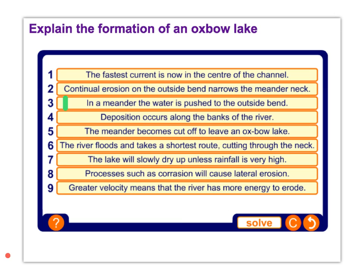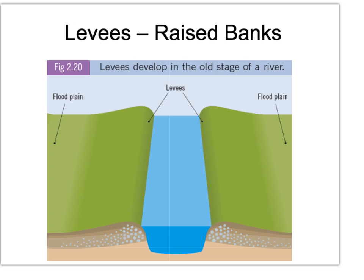The answers are: one, in a meander the water is pushed to the outside bend; two, greater velocity means the river has more energy to erode; three, processes such as corrosion cause lateral erosion; four, continual erosion of the outside bend narrows the meander's neck; five, the river floods and takes the shortest route, cutting through the neck; six, the fastest current is now in the centre of the channel; seven, deposition occurs along the banks; eight, the meander becomes cut off to leave an oxbow lake; nine, the lake will slowly dry up unless rainfall is very high.